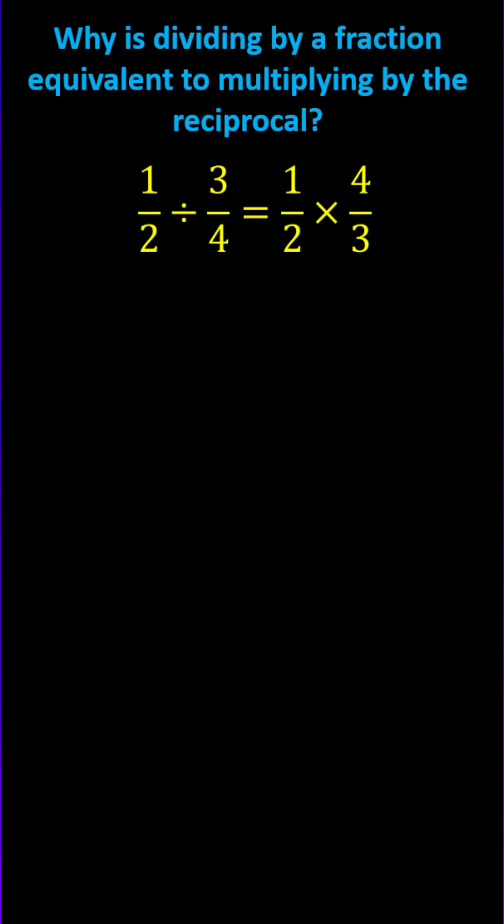Here's a nice way to explain why dividing by a fraction is equivalent to multiplying by the reciprocal. For example, 1 half divided by 3 fourths is equal to 1 half times the reciprocal of 3 fourths, which is 4 thirds.